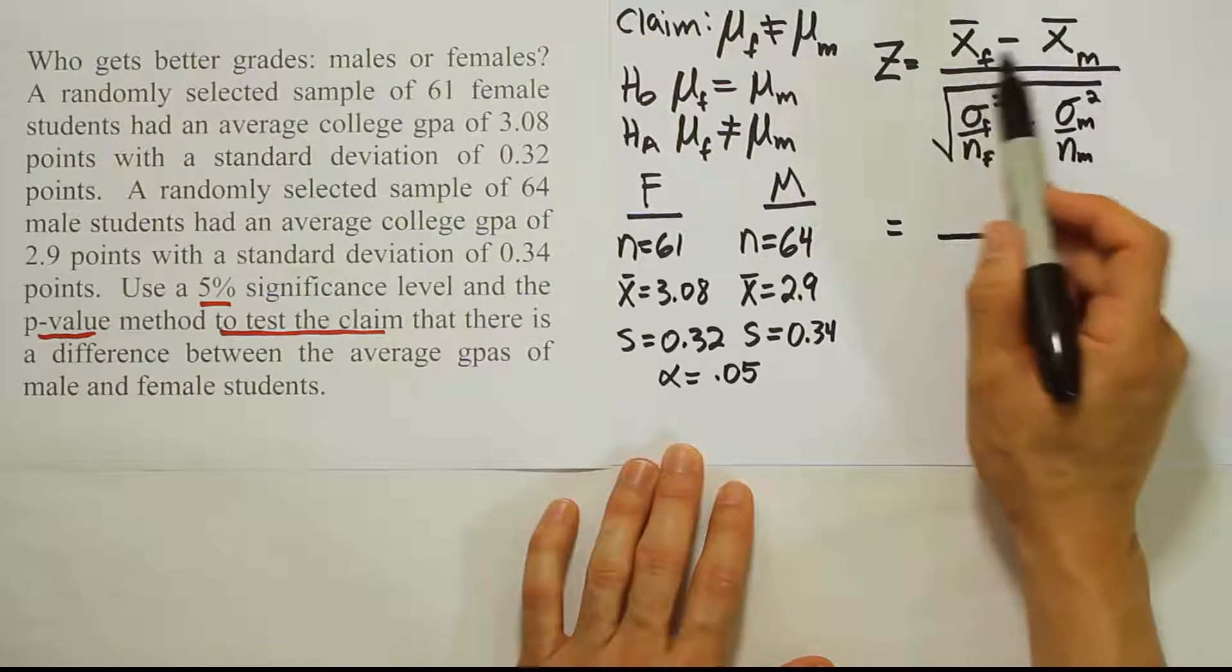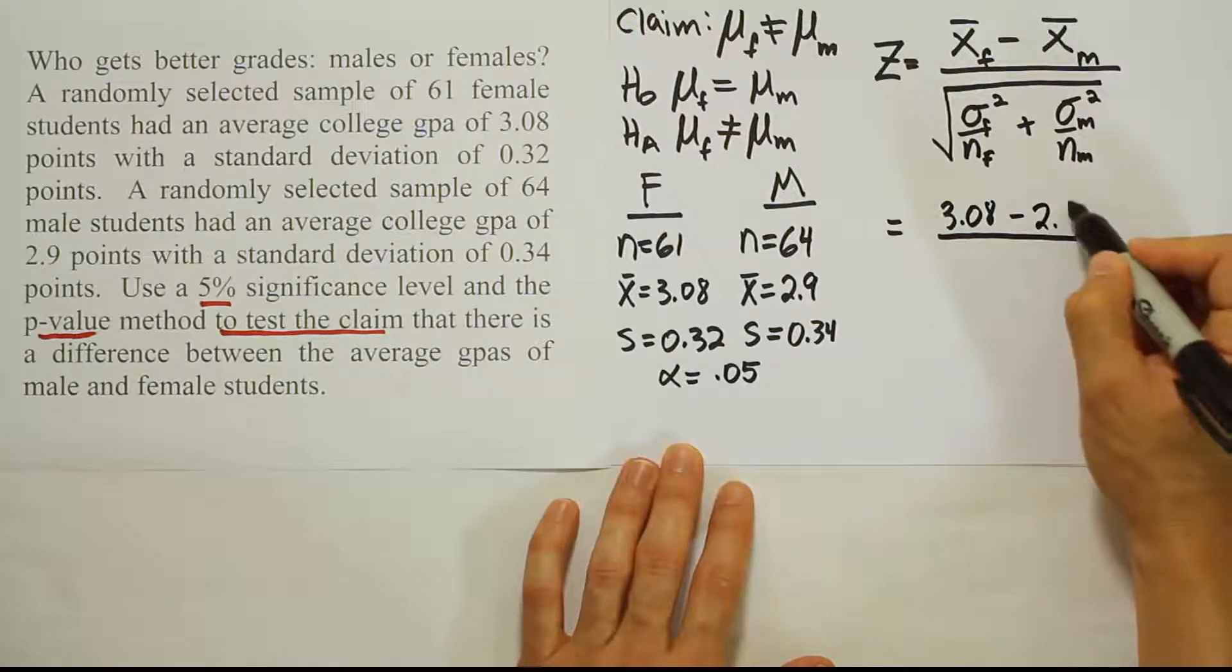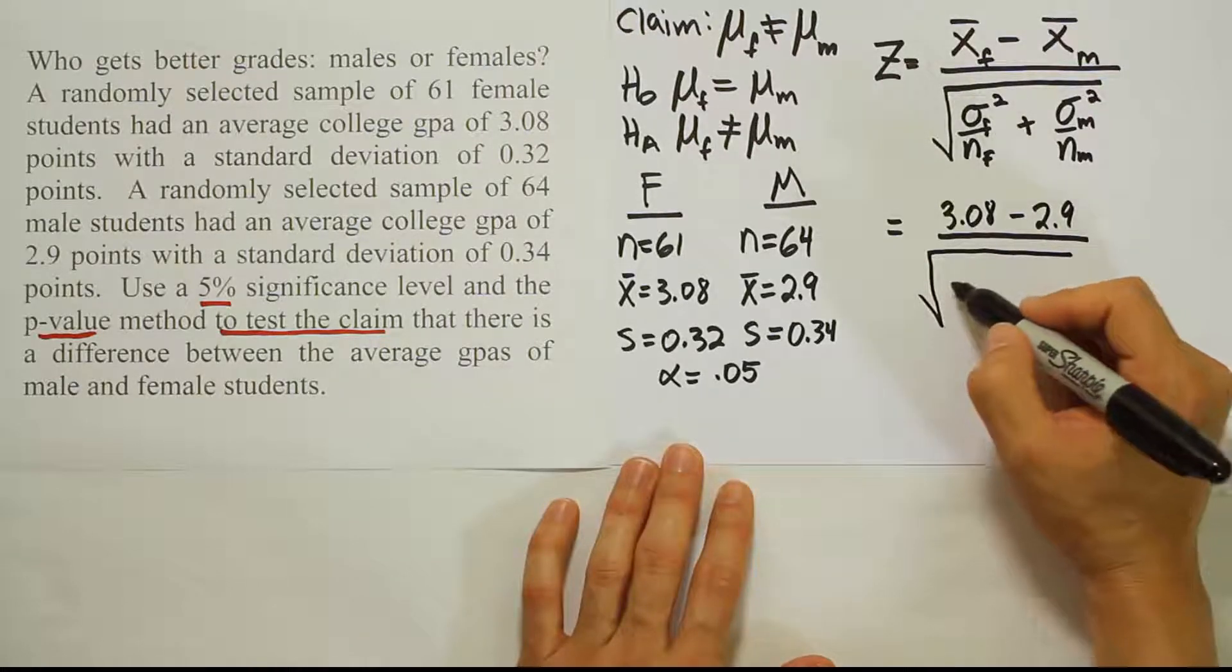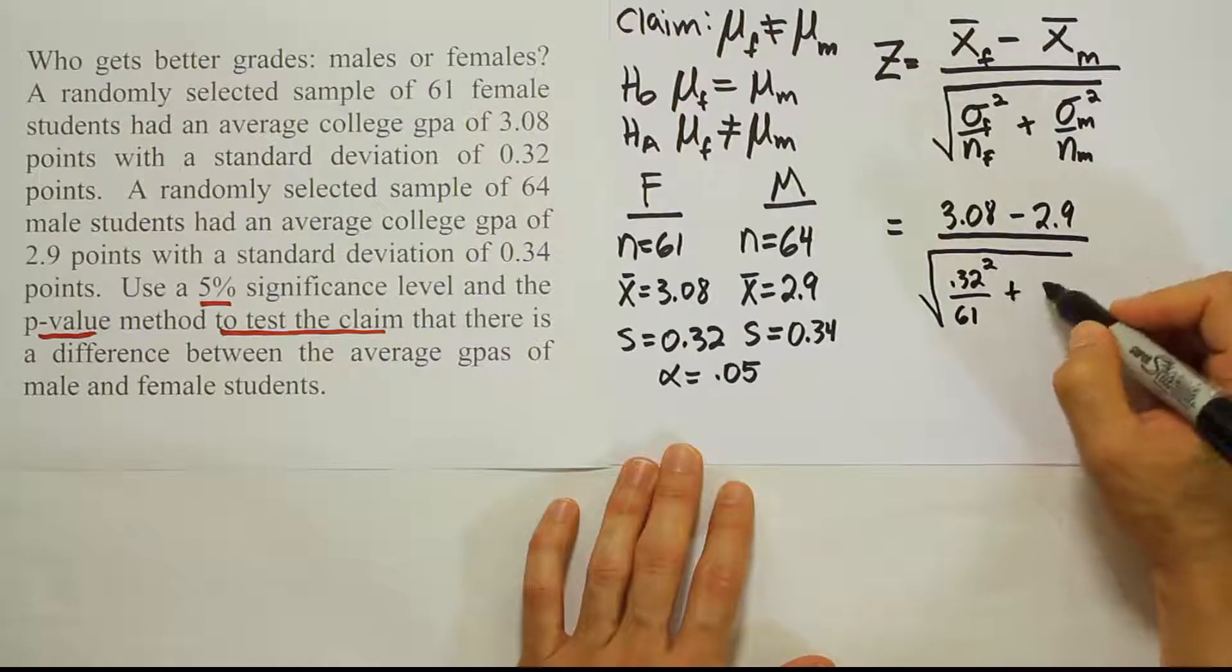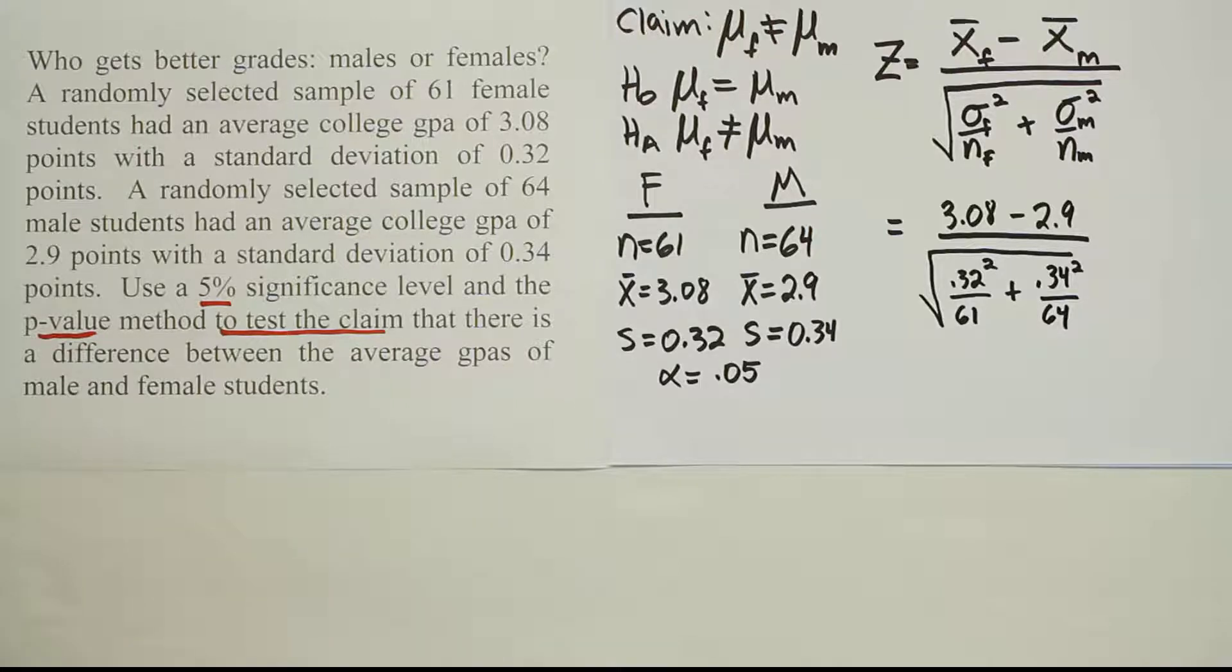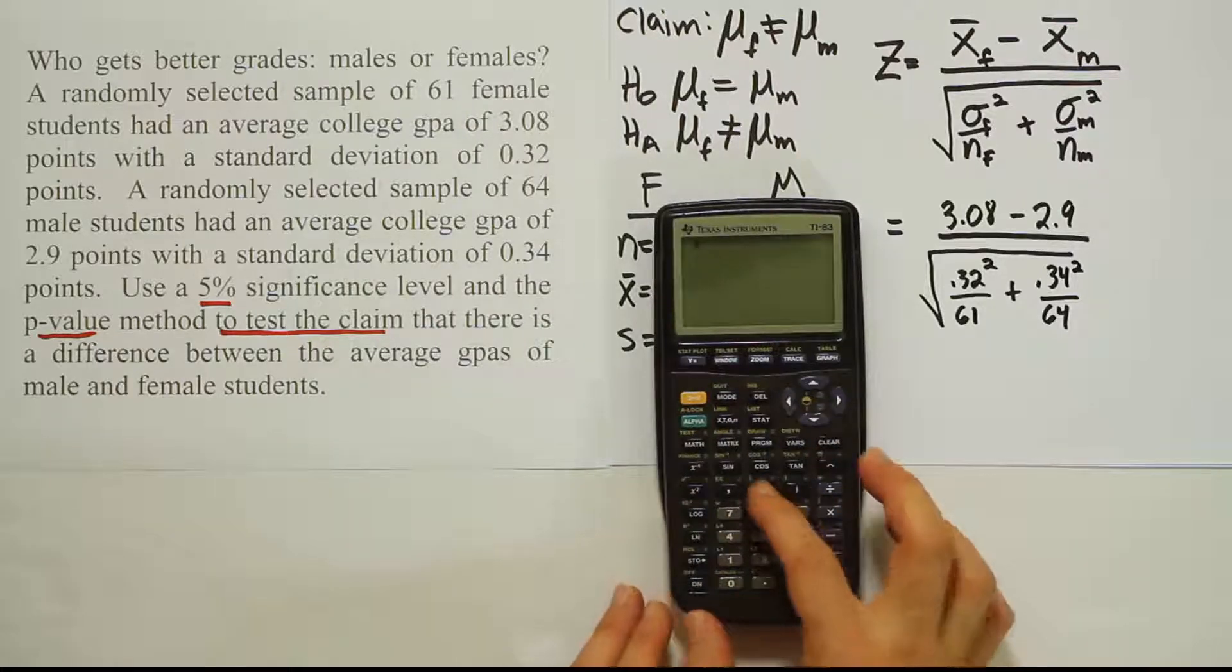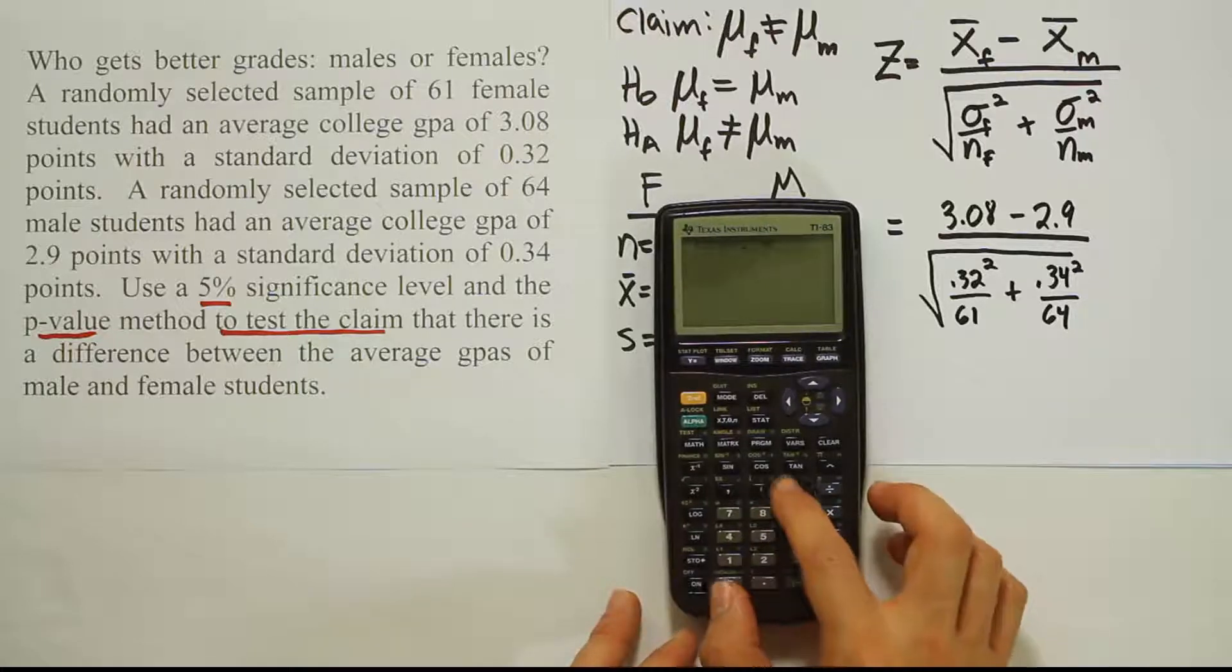The differences here are going to be 3.08 for females minus 2.9 for males. Then we're going to have under the square root 0.32² over 61 plus 0.34² over 64. And we're going to work all that out with our calculator. I'm going to do this in one step with the calculator, putting the top part in parentheses. So I'm going to put parentheses 3.08 minus 2.9, close the parentheses, then divide by.